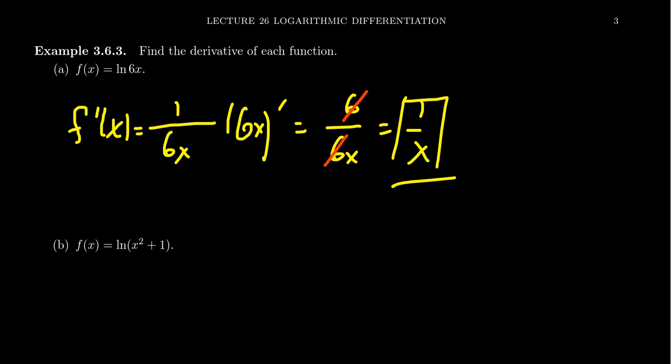You might not have expected that, because putting the 6 inside causes a horizontal compression of the graph by a factor of 6. But it turns out that doesn't affect the slopes of tangent lines. Using logarithmic properties, you can expand this to be the natural log of 6 plus the natural log of x. For logarithms, a horizontal stretch or compression is equivalent to a vertical shift up or down. When you take the derivative, the natural log of 6 is a constant with derivative 0, so you just get the derivative of the natural log of x, which is 1 over x.